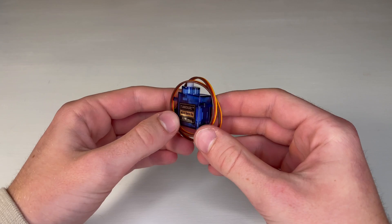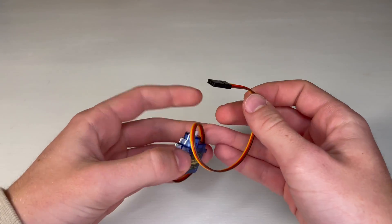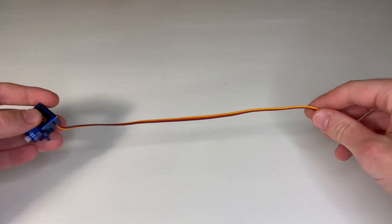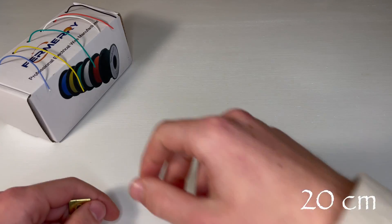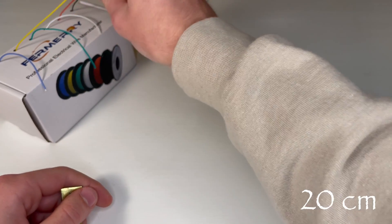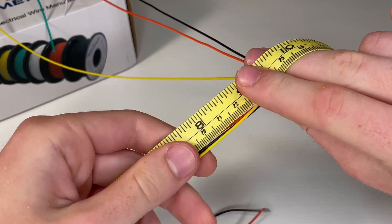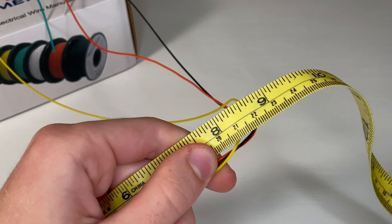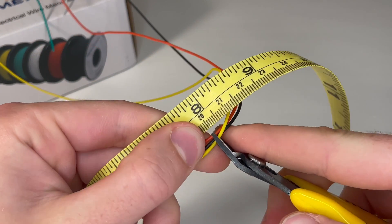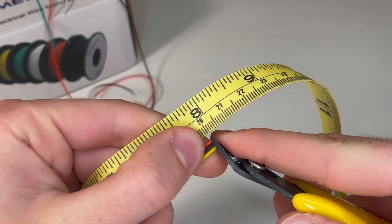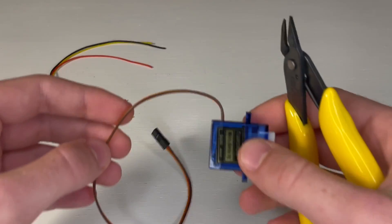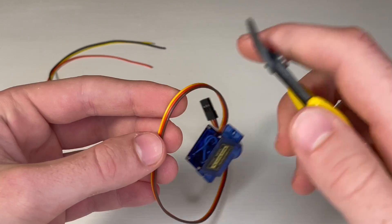So first we need to make some wire extensions for our servos. In the micro servo's case this will be 20 centimeters. And it doesn't matter where you cut the servo's cable.